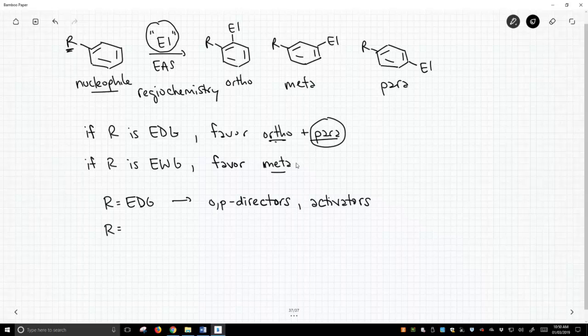If R is an electron-withdrawing group, then we call these meta-directors.